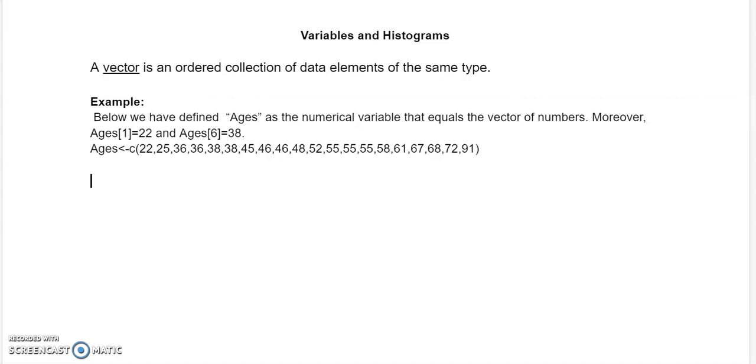This is Part 2 of the lecture on Variables and Histograms. A vector is an ordered collection of data elements of the same type. How we're going to write vectors in this class is you'll put the name of your vector, then a less than sign, then a minus sign, then a C, then a parenthesis. Then you start putting your values after that, separated by commas.